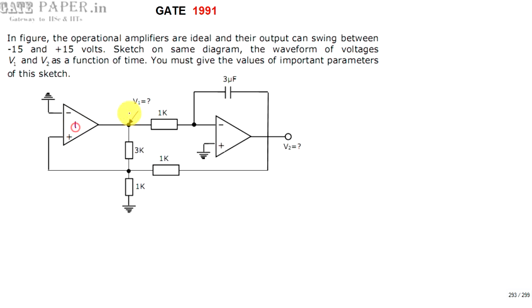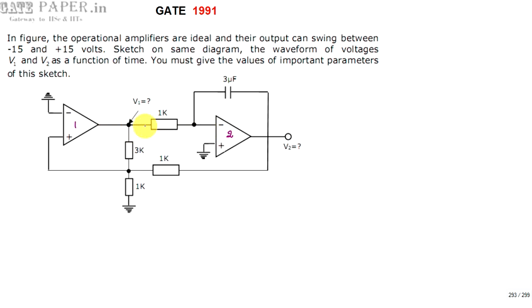This is op-amp 1 and this is op-amp 2. For op-amp 1, if you observe, there is no feedback present. There is no negative feedback — what it has is only positive feedback.